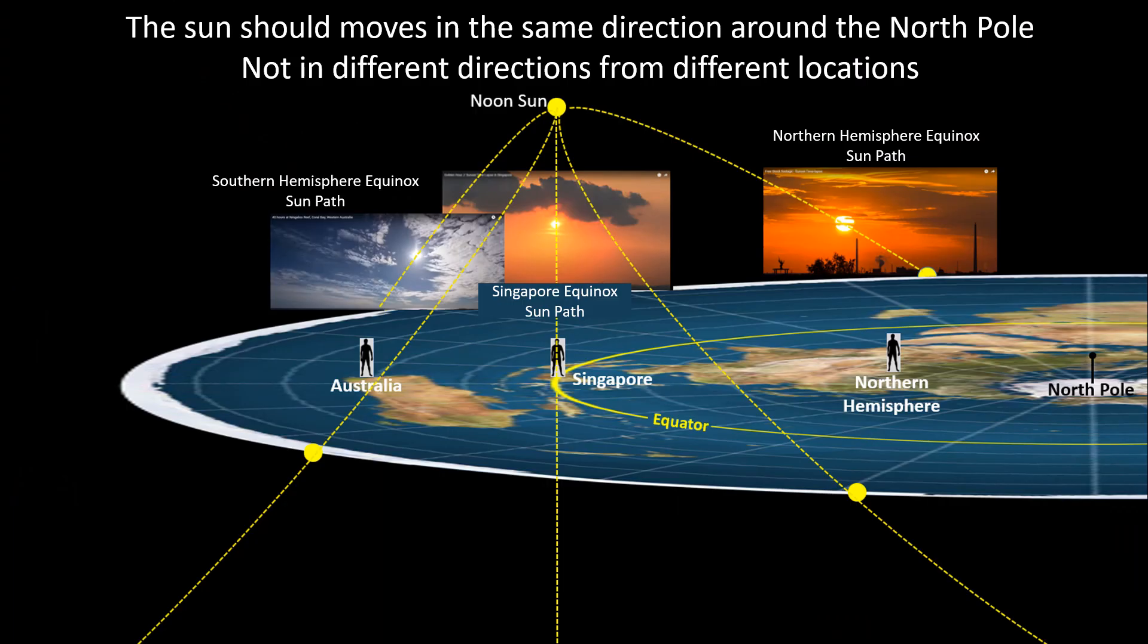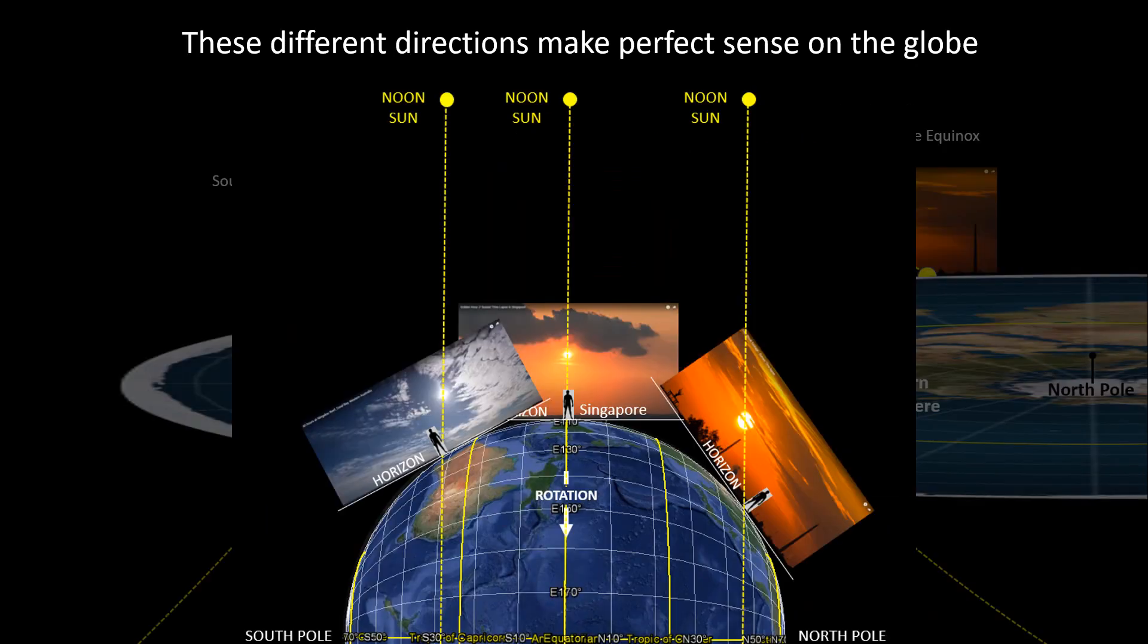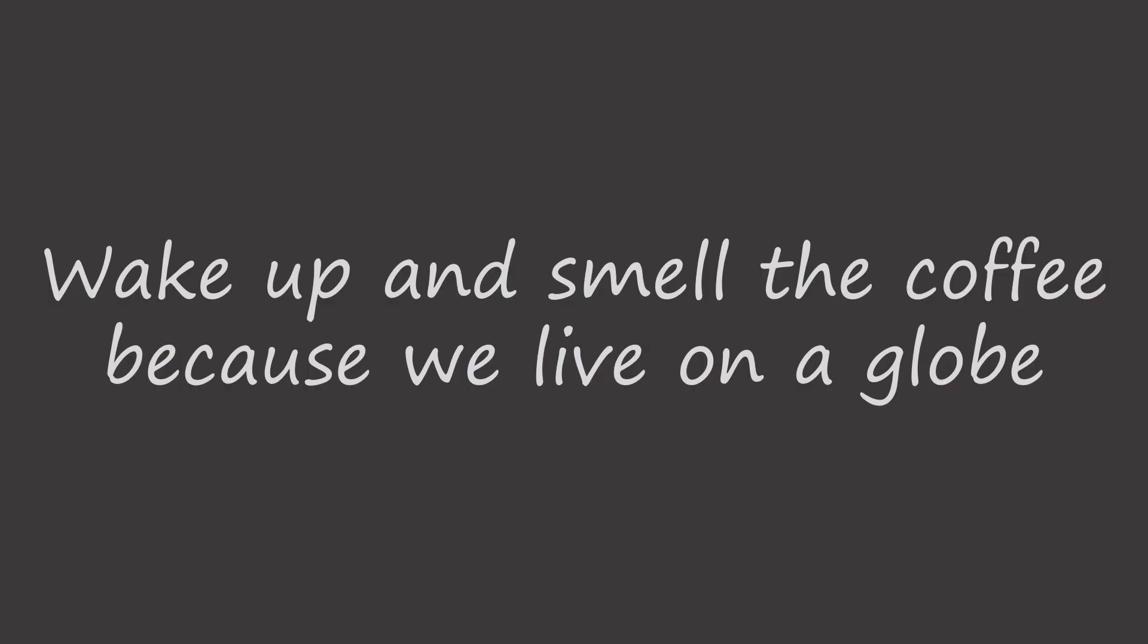And finally if the Earth was flat the Sun should move in the same direction around the North Pole not in different directions from different locations. So again we would not see this if the Earth was flat. But these observed sunsets make perfect sense on a globe. So if you're a flat earther it's time to wake up and smell the coffee because observed evidence shows that we live on a globe.